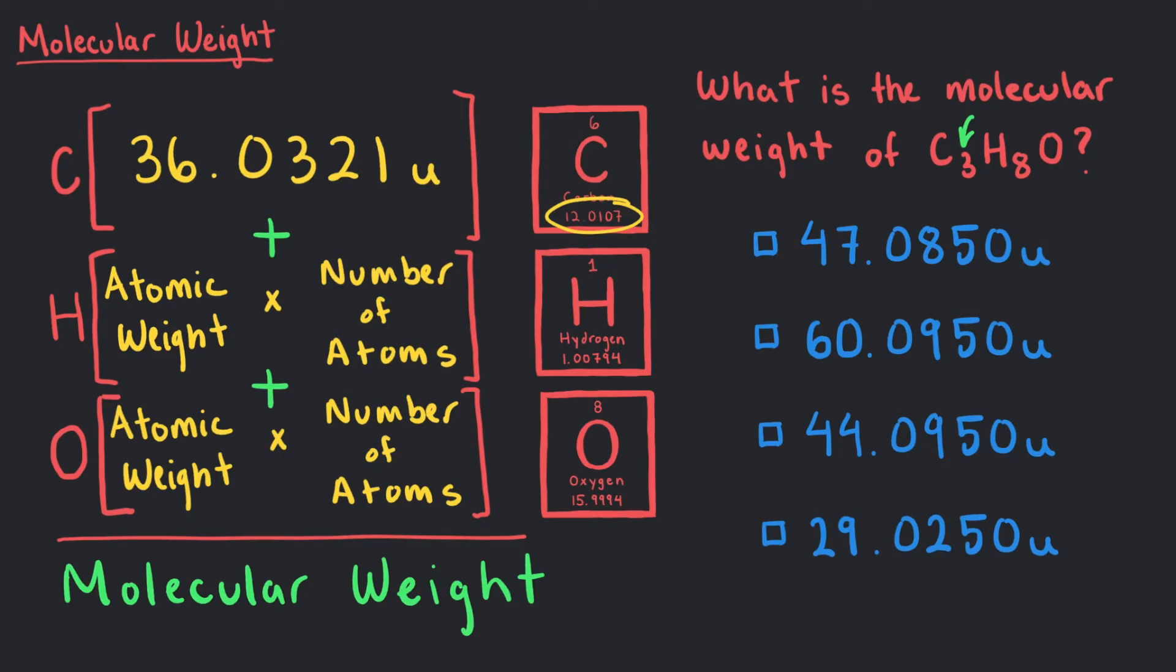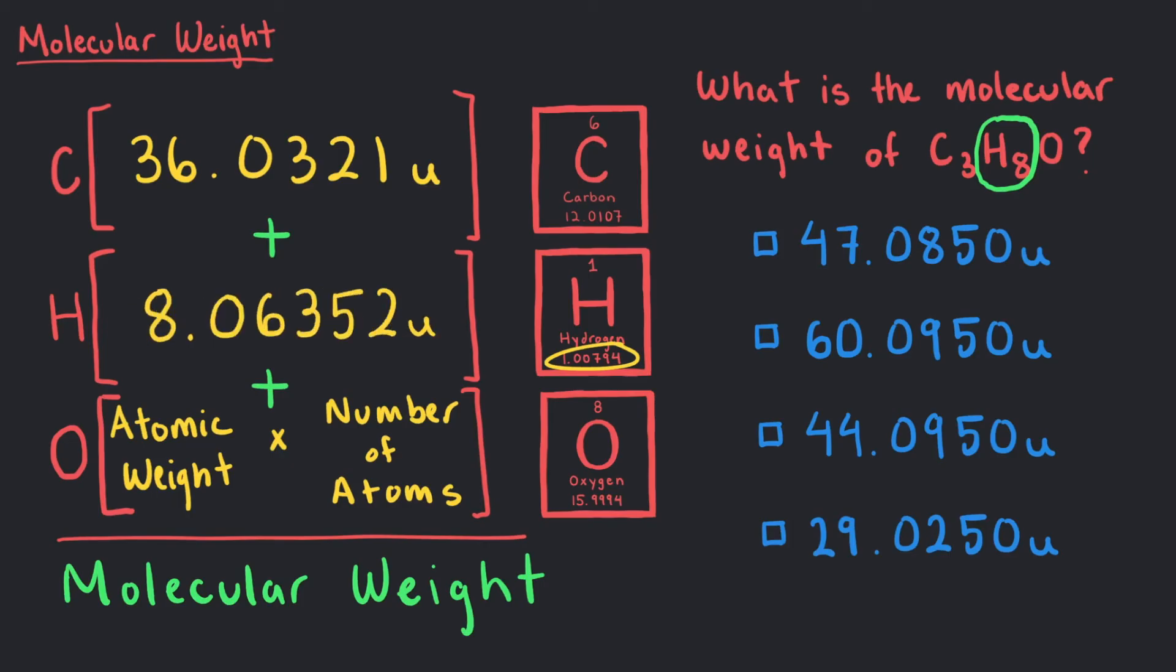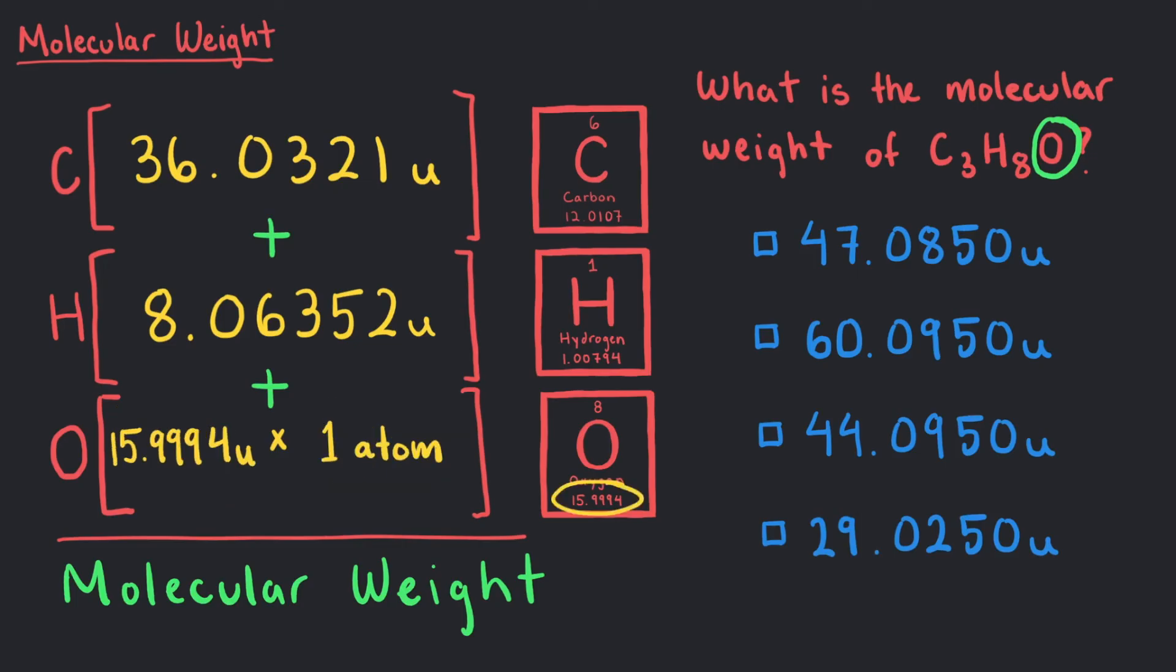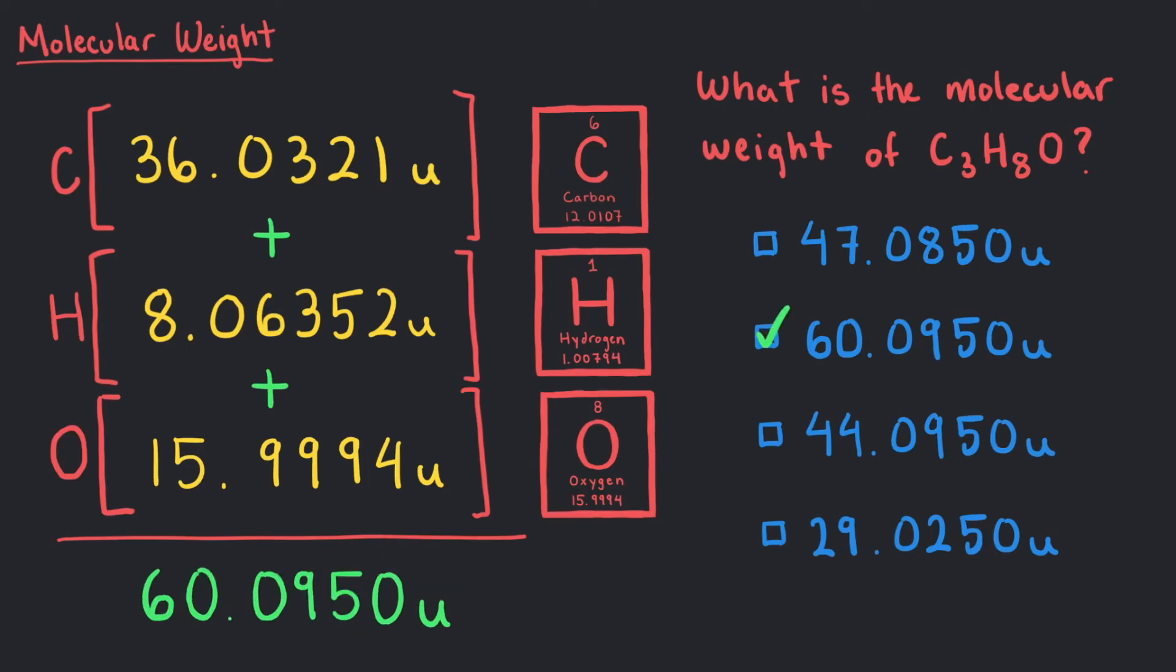Now, we do the same for hydrogen. 1.00794U times eight hydrogen atoms is 8.06352U. For oxygen, it's 15.9994U times one oxygen atom which is 15.9994U. Adding them all together, we have a total of 60.0950U as the molecular weight for C3H8O.